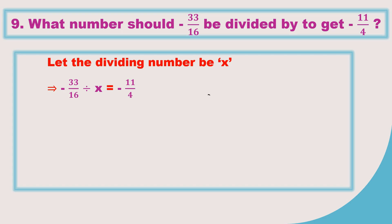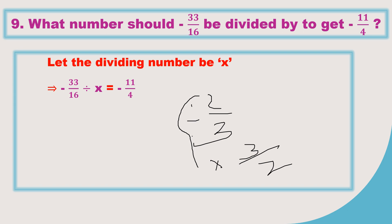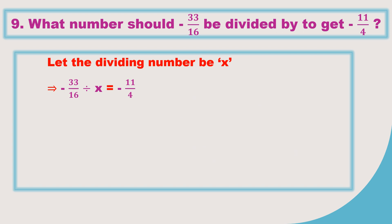If it is divided by 2 by 3, put 'into' and write as 3 by 2 — just changing the division symbol to multiplication and converting the fraction to its reciprocal. This we already discussed in smaller classes. So here instead of division, put 'into' and write 1 by x, because the reciprocal of x is 1 by x. So: minus 33 by 16 into 1 by x equals minus 11 by 4.